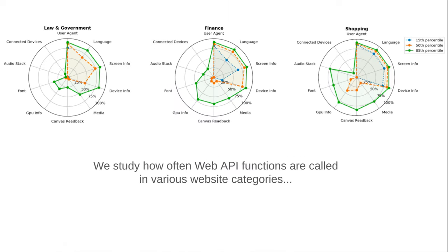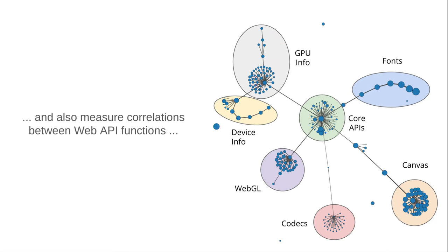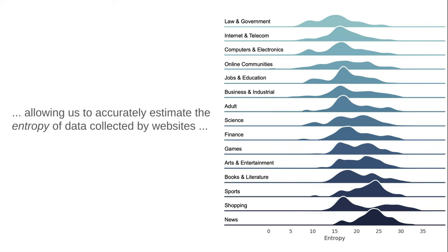We study how often web API functions are called in various website categories, and also measure correlations between web API functions, allowing us to accurately estimate the entropy of data collected by websites.